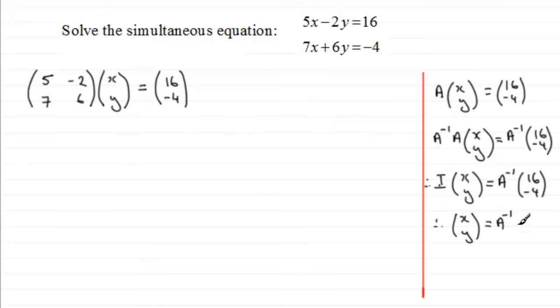So we're just left with (x, y) equals the inverse of A then multiplied by (16, -4). And this is the result that we're always going to use. If we want to find (x, y), all we need to do is multiply (16, -4), whatever values we've got here, by the inverse of this matrix. And this matrix must be on the left of these values, like we've got here.